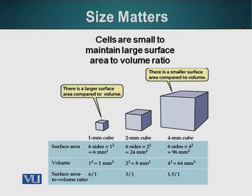Now let's look at a slightly bigger cube — two millimeters on each side. The surface area becomes 24 square millimeters. Using the same formula, the volume will be two cubed, which is eight. So the surface area to volume ratio is 24 to 8, or simplified, three to one. We've now seen that as size increases, the surface area to volume ratio decreases, and that is an impediment for cells to be of a bigger size.